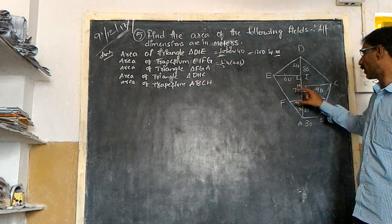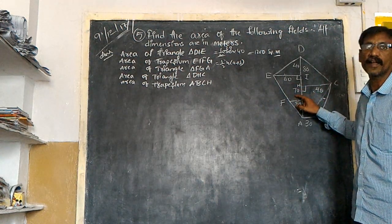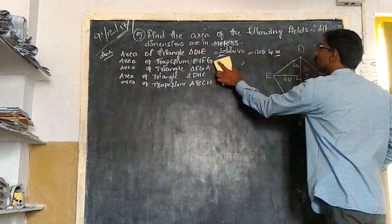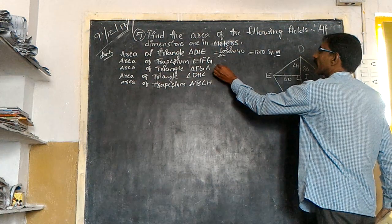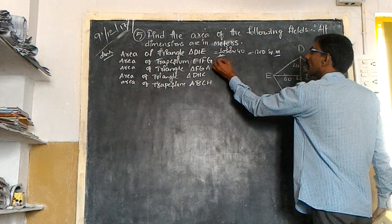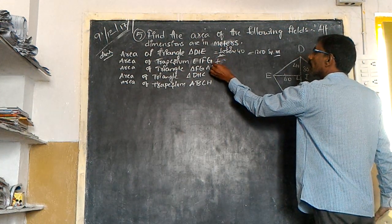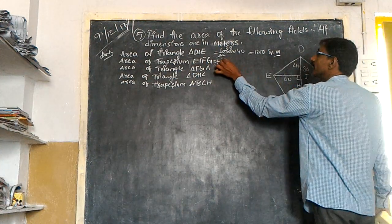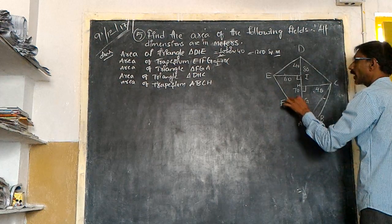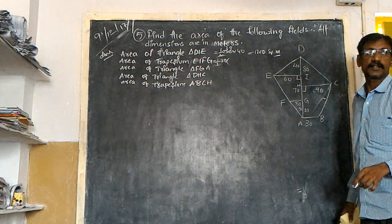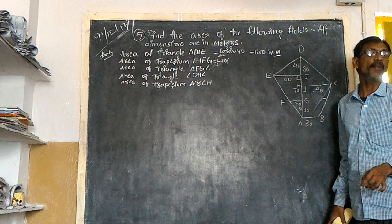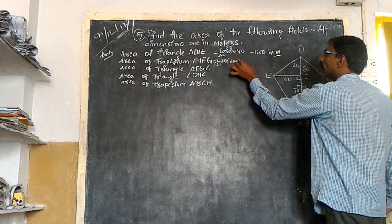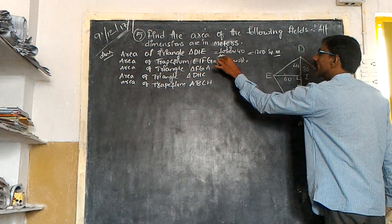H means height. Height is 70. I will write half. This is equal to half H, 70, into A plus B. 60 plus 50, how much? 110.